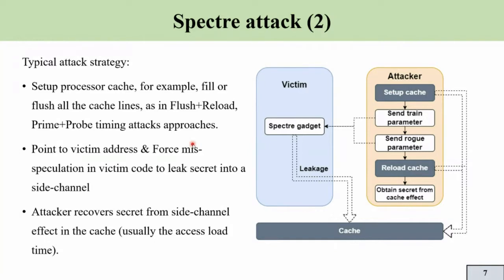In the second step, the attacker points to the victim address space and tries to send some training parameters to force a mis-speculation in the victim code, so that a side-channel effect appears in the cache of the processor. In step three, the attacker reads the side-channel effect in the cache and tries to recover the secret from the cache — which is the secret information in the victim function.